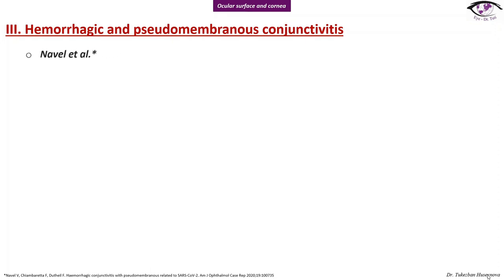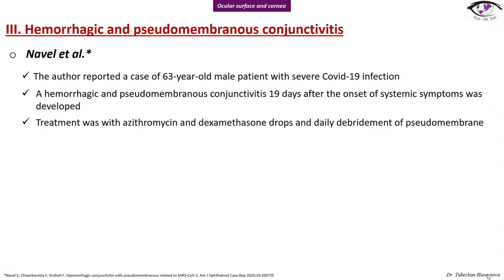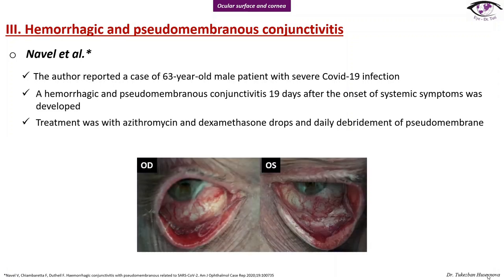Hemorrhagic and pseudomembranous conjunctivitis was presented from Nabel et al. The authors reported a case of a 63-year-old male patient with severe COVID-19 infection. Hemorrhagic and pseudomembranous conjunctivitis developed 19 days after the onset of systemic symptoms. Treatment was with antibiotics and dexamethasone drops, and daily debridement of pseudomembranes was also performed. Here you can see a photo of the right and the left eye.